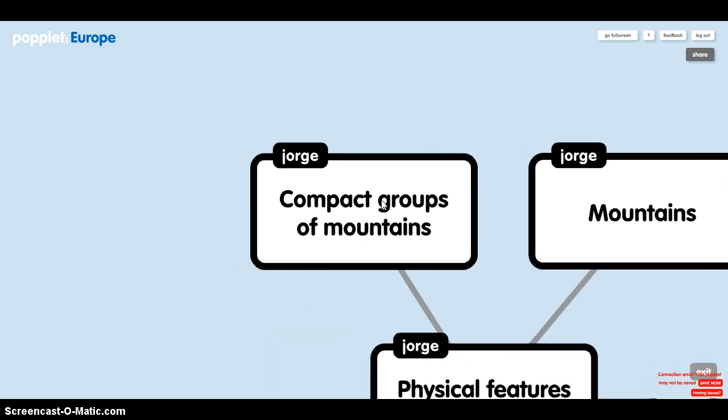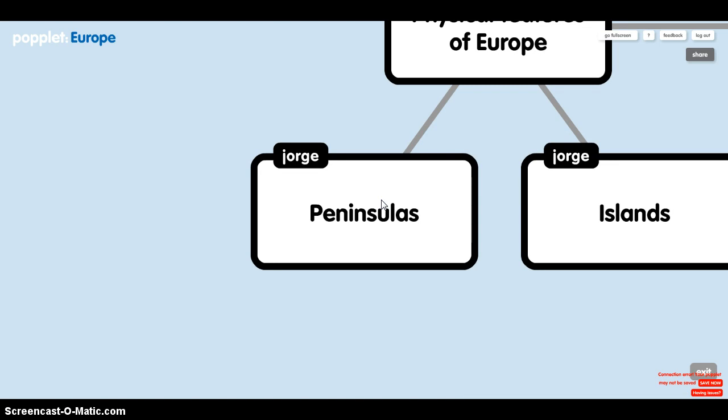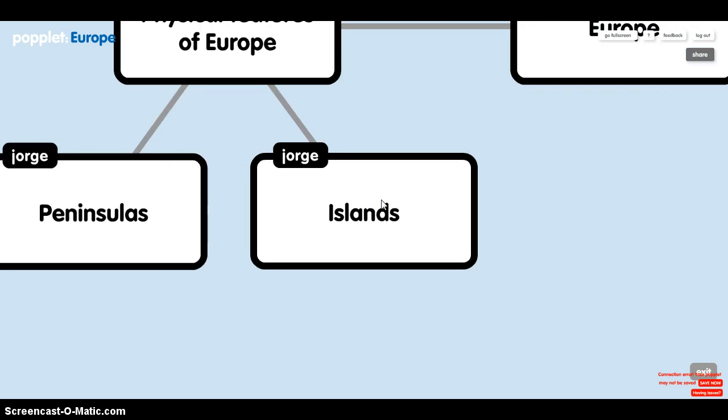Compact groups of mountains are called plateaus or massifs. The Scandinavian, Iberian and Italian peninsulas are the largest in Europe. Iceland, the British Isles, Sardinia, Sicily and Greece are the largest islands in Europe.